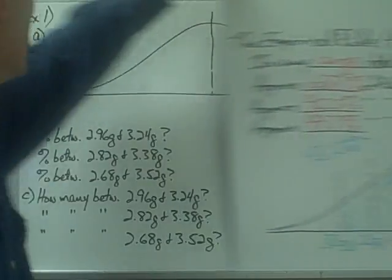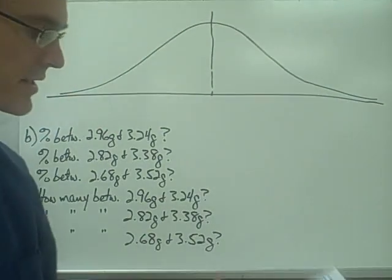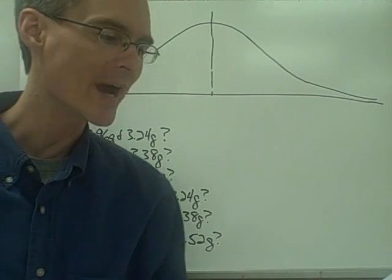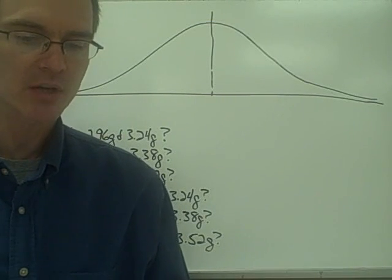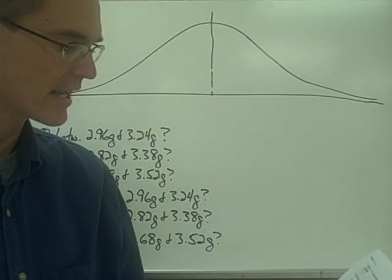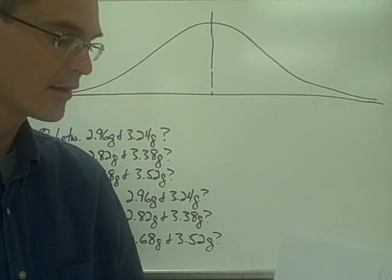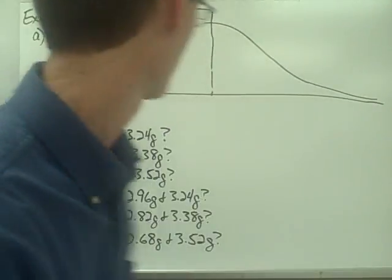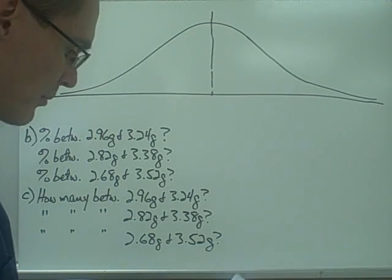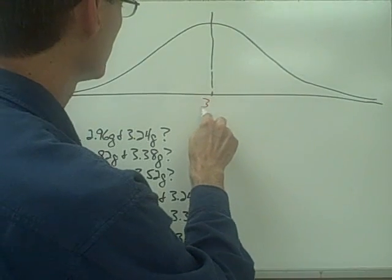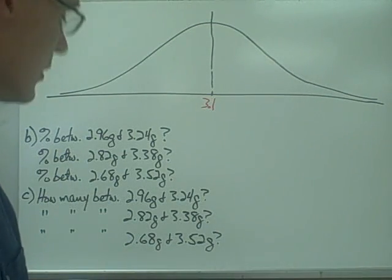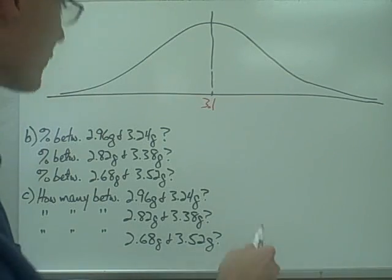Let's take a look at an example. A group of students weigh 500 U.S. pennies. They find that the pennies have normally distributed weights with a mean of 3.1 grams and a standard deviation of 0.14 grams. Sketch the normal curve for this distribution and label the mean and three standard deviations above and below the mean. Here I have a sketch of a normal curve, and the mean value is 3.1 grams, right here in the middle.